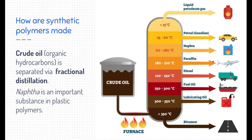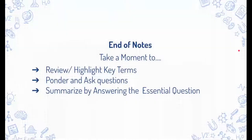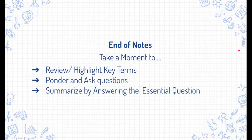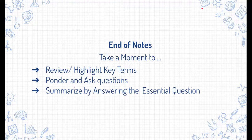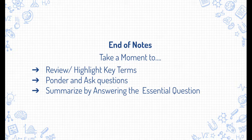Now when we want to make plastic polymers, typically naphtha is an important chemical used to make plastic polymers. All right, that's the end of our notes. This is a good opportunity to take a moment to review the important highlight key terms and review those key terms. Ponder and ask questions. Seek answer those questions and summarize and answer the essential question. Good luck!